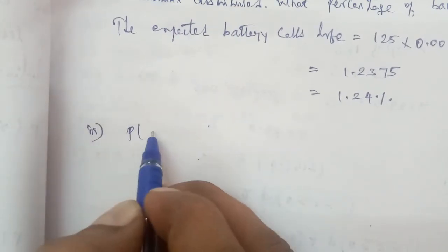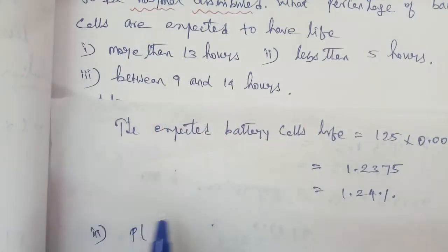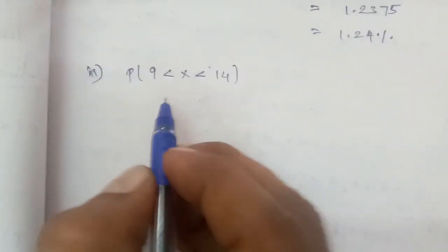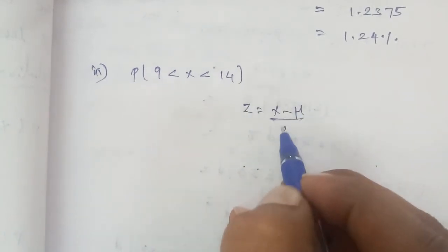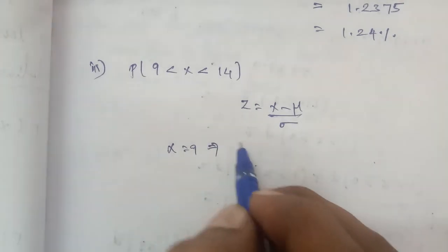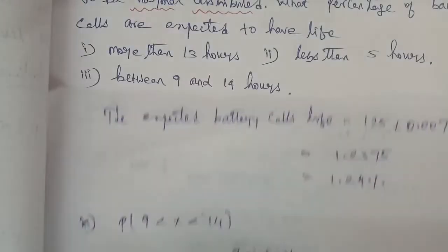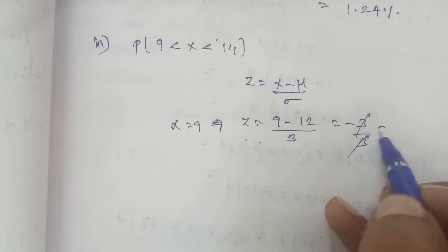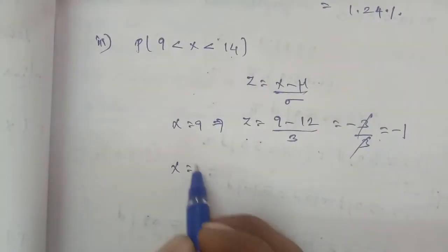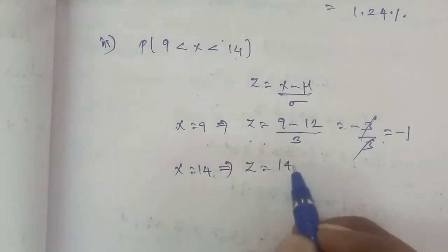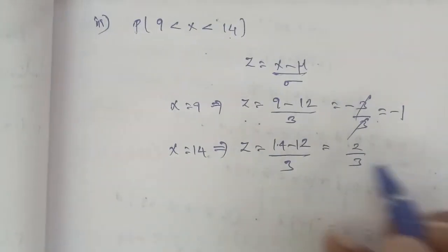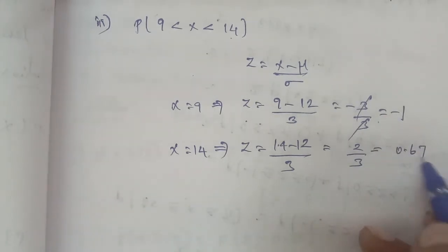Submission 3: between 9 and 14 hours. P(9 < X < 14). Using Z = (X − μ) / σ: for X = 9, Z = (9 − 12) / 3 = −3/3 = −1. For X = 14, Z = (14 − 12) / 3 = 2/3 = 0.67.